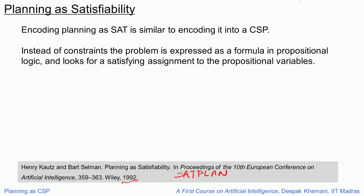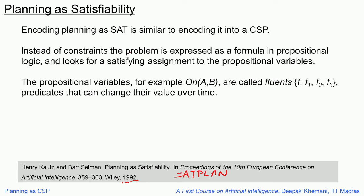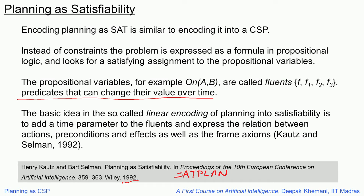Essentially all the variables have values which are true or false, and all the constraints are logical connectives. We look for a satisfying assignment to the propositional variables. The variables, for example 'on a b', are called fluents — a standard term in AI nowadays. By fluents we mean predicates that can change their value over time, typically using symbols like f1, f2, and so on. The basic idea is the so-called linear encoding, where we add a time parameter to the fluents and express the relation between actions, preconditions, and effects.